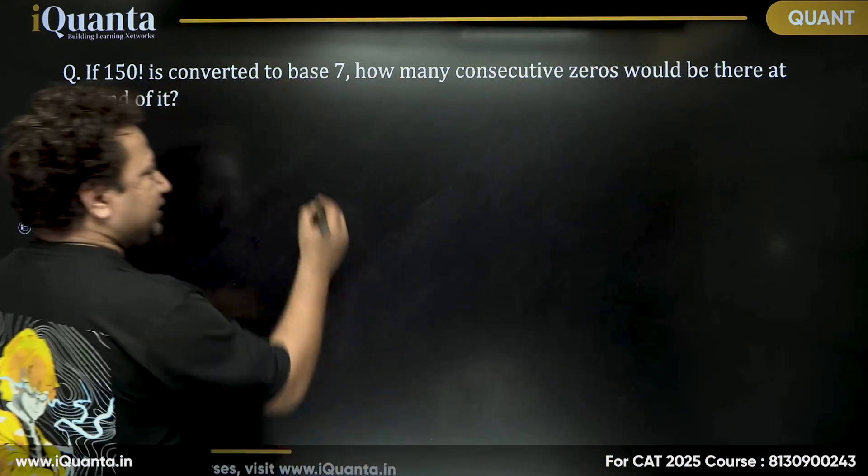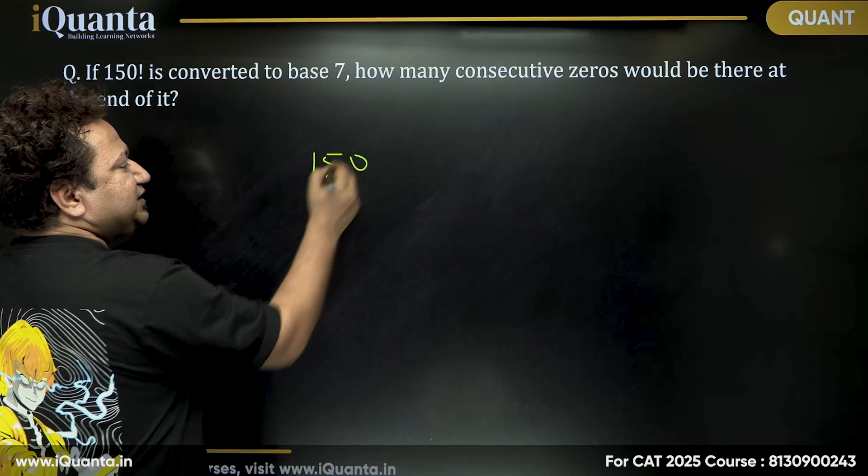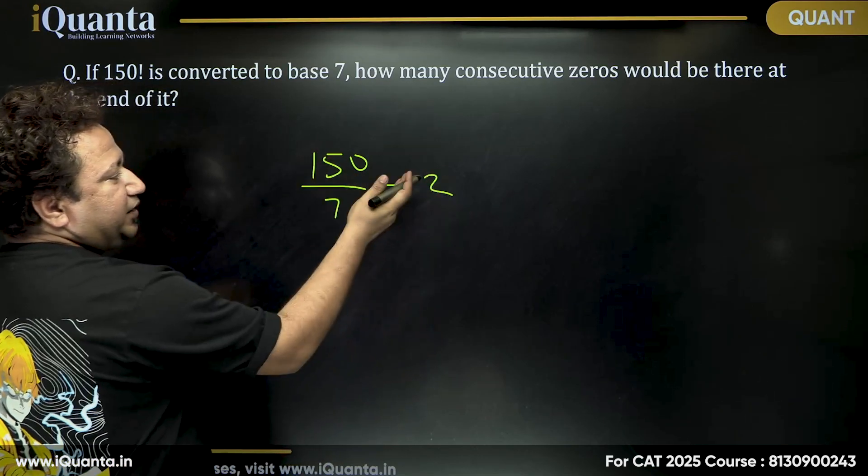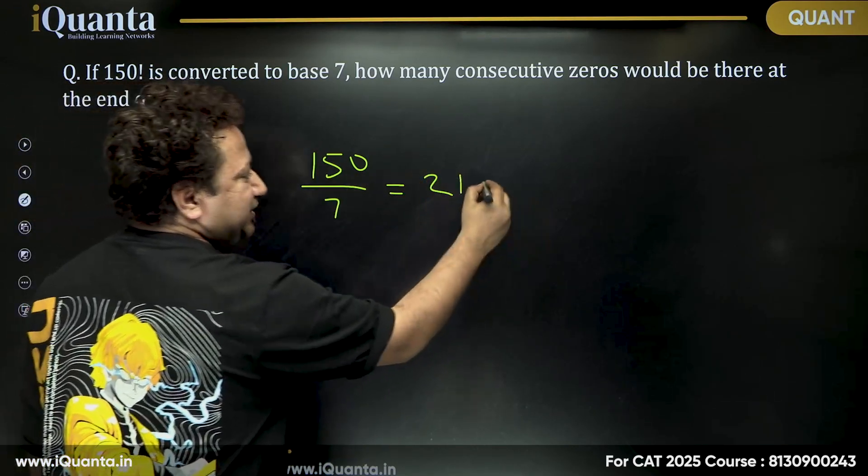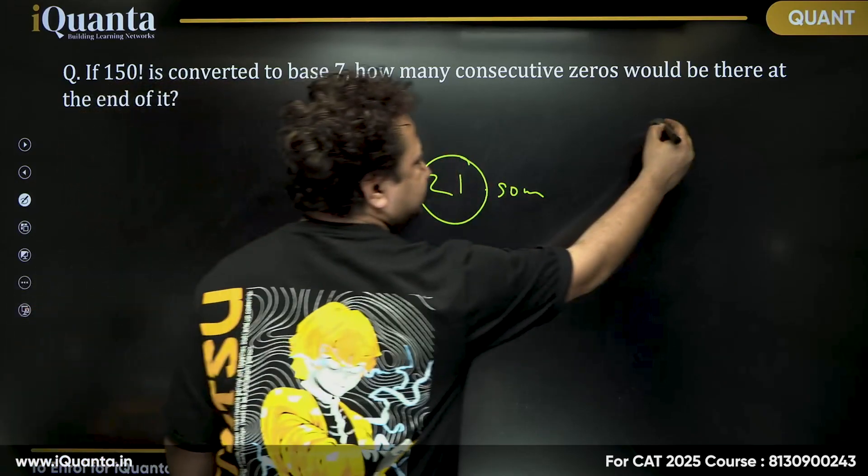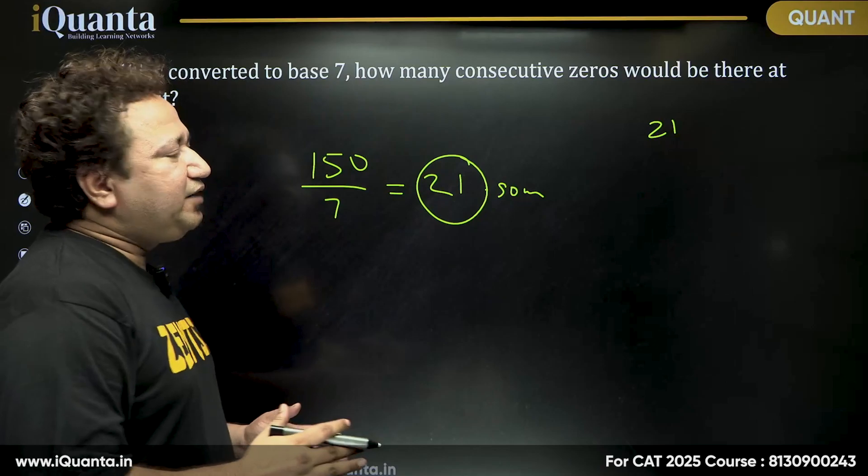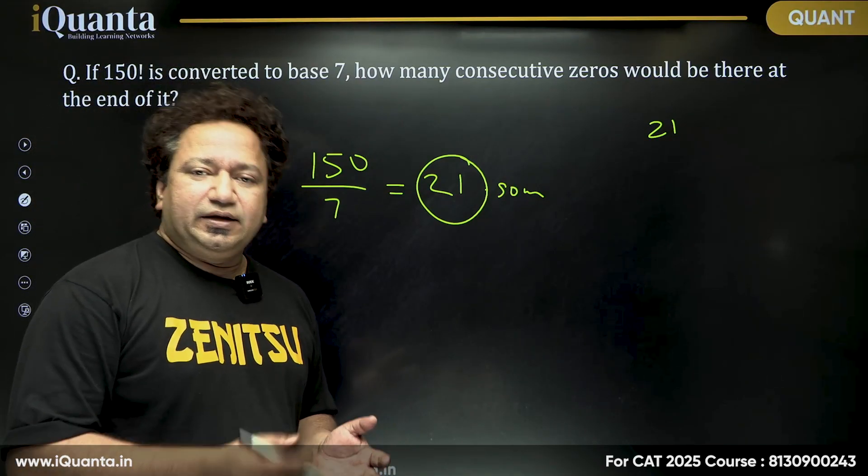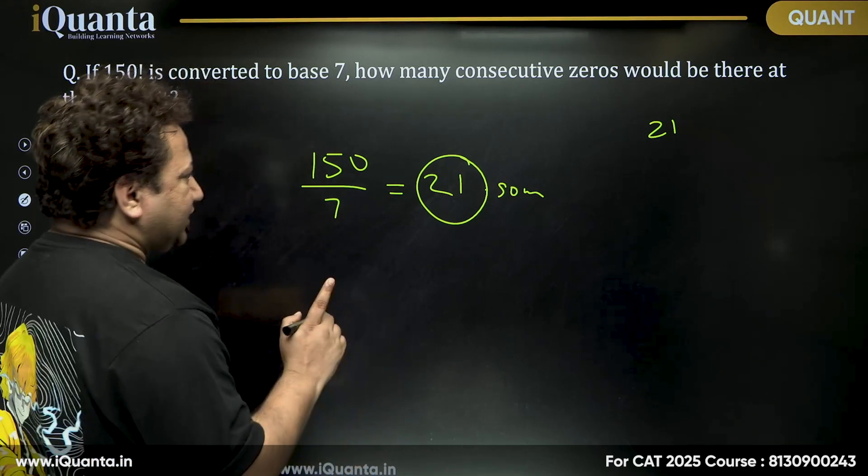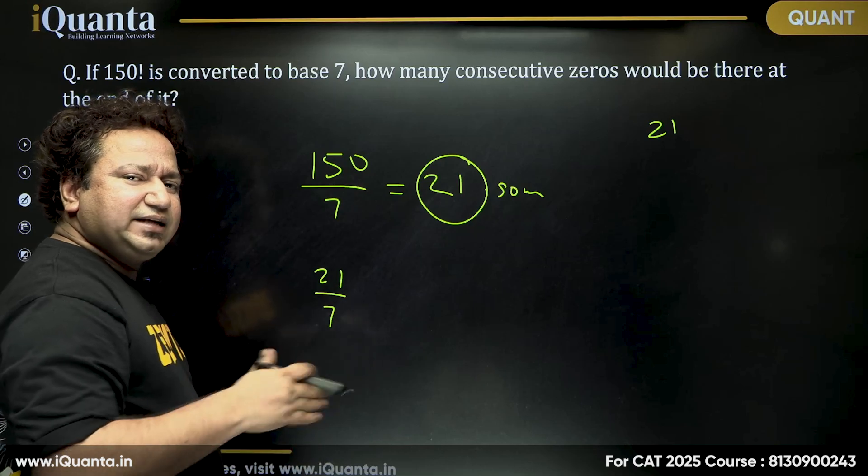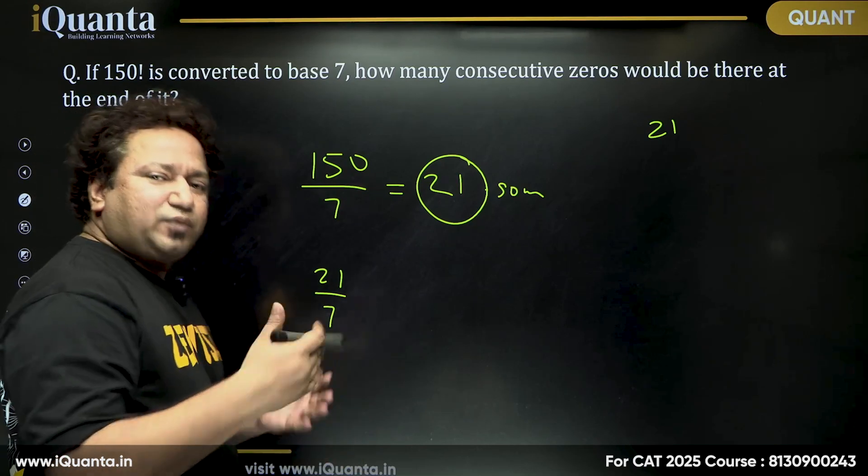So for that, the normal thing is we need to divide 150 successively by 7. So I do it first time, 7 times 2 is 14, 7 times 1 is 7 point something. Now we are concerned only with the integral part. So 21 is there. So we have 21 sevens in 150. By the way, we can have extra sevens also. In case of 7 squared, it is 49. So whatever we have here, we'll divide that by 7 again.